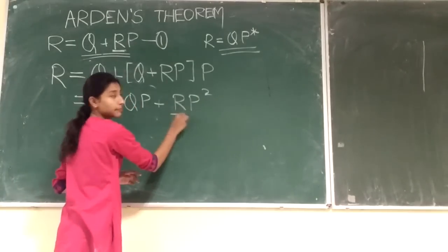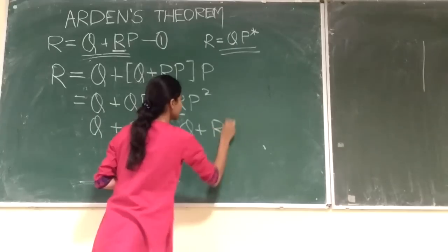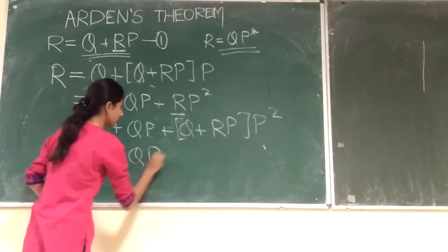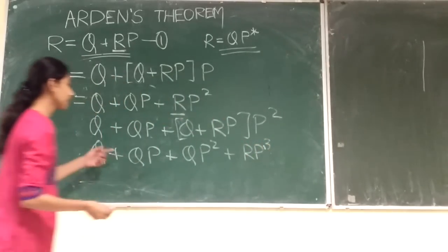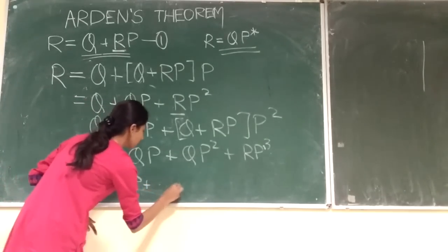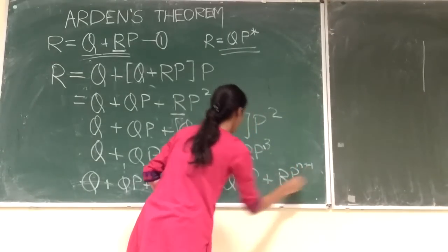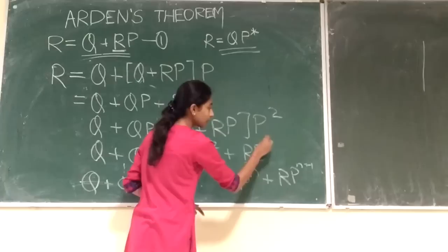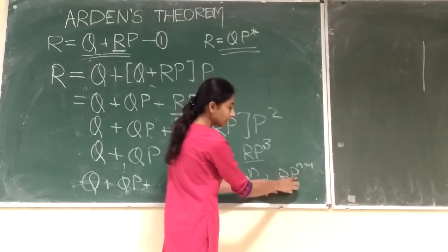Continuing this substitution, it will be Q + QP + QP² + RP² into P. After continuing this solution for n number of steps, we will get Q + QP + QP² + ... + QP^n + RP^(n+1). We can observe that if the last Q term has P to the power n, then for the term RP, the power of P will be n+1.